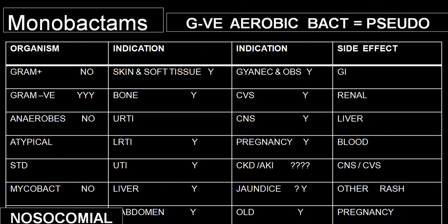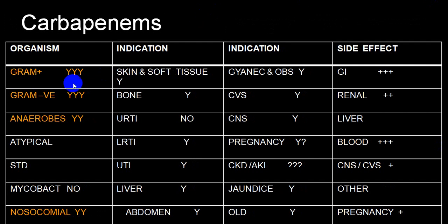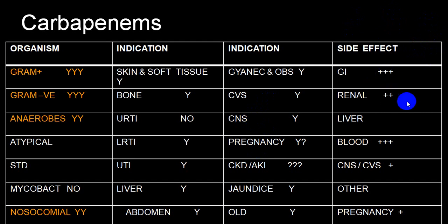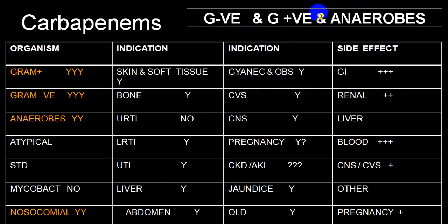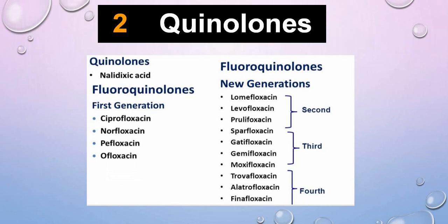Carbapenems are very effective on gram-negative and gram-positive and anaerobes — very useful in septicemia and nosocomial infections. Now we come to one of the most commonly utilized groups — quinolones, also called fluoroquinolones. The original quinolone was nalidixic acid, now outdated. Fluoroquinolone generations followed: first generation includes ciprofloxacin, norfloxacin, and ofloxacin — norfloxacin is mainly used for GI tract and urinary tract infections. Second generation levofloxacin is most commonly utilized in everyday practice. Third generation moxifloxacin is commonly used for MDR tuberculosis. Fourth-generation fluoroquinolones are not yet freely available in markets.